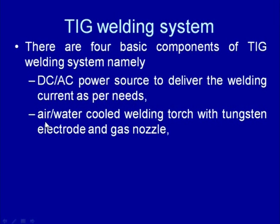The welding torch is cooled either with air or water depending on the current capacity of the tungsten electrode. Water cooling permits higher current capacity because electrical resistance heating that causes temperature rise in the tungsten electrode can be easily managed. For high-current TIG welding systems — above approximately 150 amperes — water cooling becomes mandatory, while for low-current systems, air cooling is sufficient to maintain the tungsten electrode within safe temperature limits.